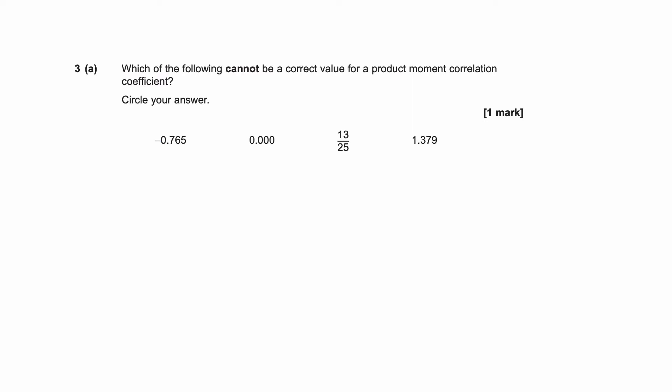3A, which of the following cannot be a correct value for a product moment correlation coefficient? Circle your answer. So here the answer is going to be, if we have a look. This one's OK, it's negative one, so it'd be a negative gradient. This is zero, no correlation at all. This is a positive one, but it's less than one. This one is the one that it can't be because it's greater than one.